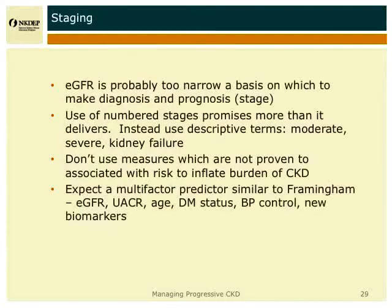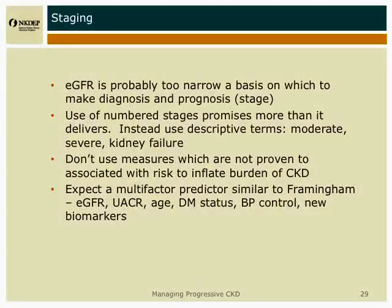I'm not going to talk about staging. We don't use staging in the educational materials that we produce for a number of reasons, but mostly because by itself EGFR is probably too narrow a basis on which to talk about diagnosis and prognosis. I think eventually we'll probably evolve to a multi-factor prediction score that includes EGFR, UACR, age, diabetes status, blood pressure control, and maybe some other biomarkers.